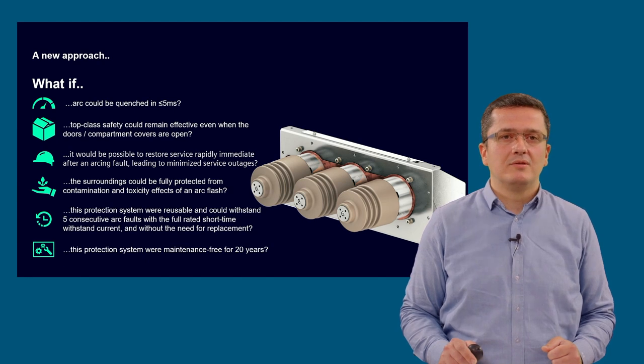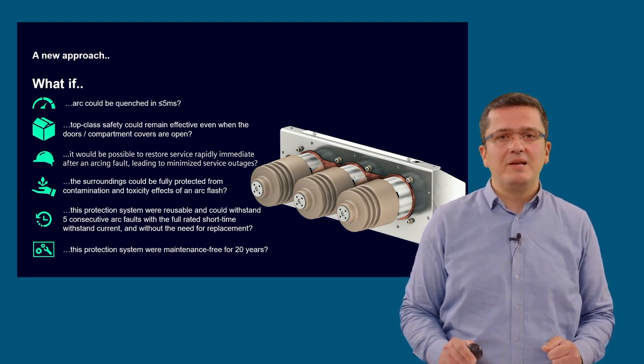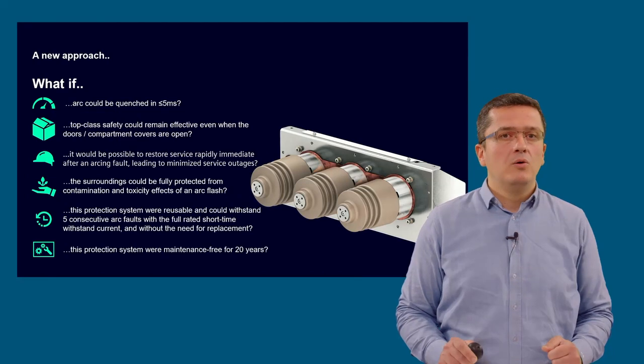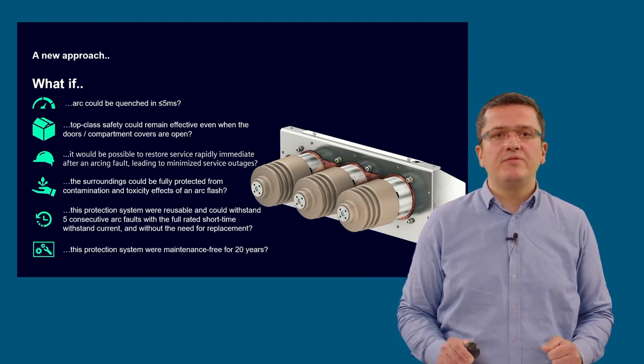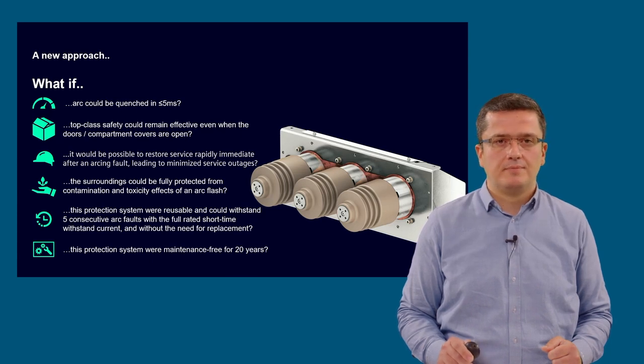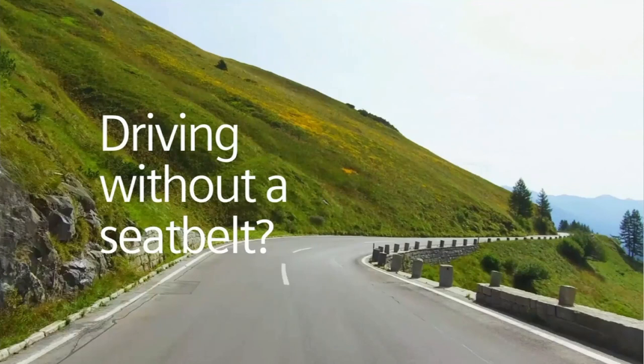We have a solution. Catching the arc itself in five milliseconds after ignition of the arc, preventing the damage to the equipment due to arc flash, uncompromising safety even when the doors or compartment covers are open, which is reusable, a unique feature allowing to restore the service in a very short time without the need for replacing the equipment and the switchgear it is located in. You'll be watching a short video now, demonstrating this solution in a nutshell. Then I'll be back.